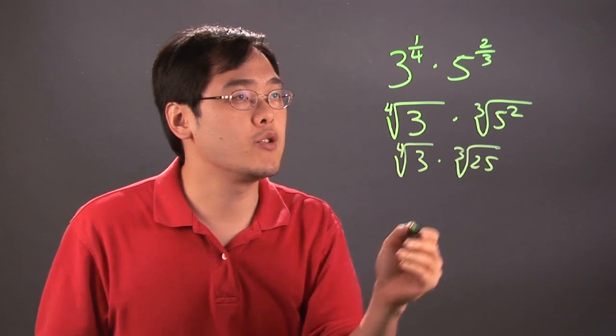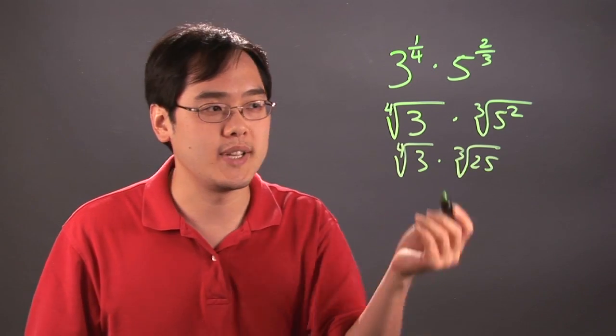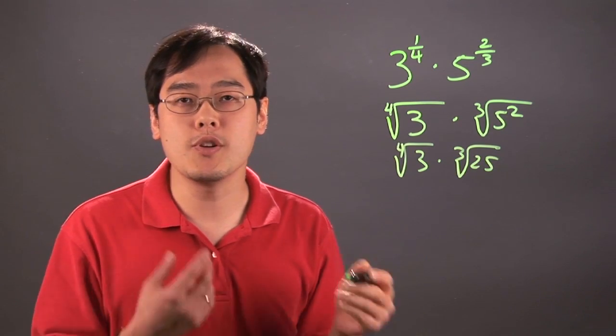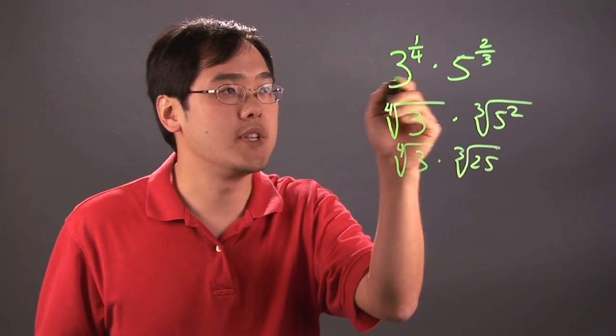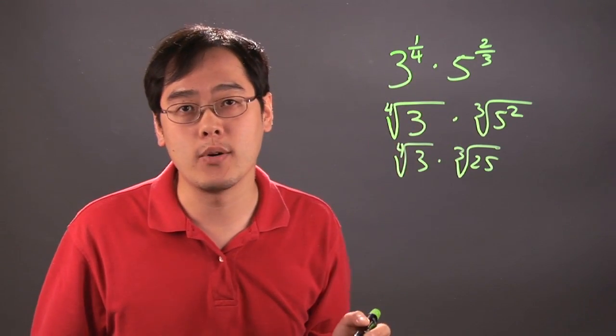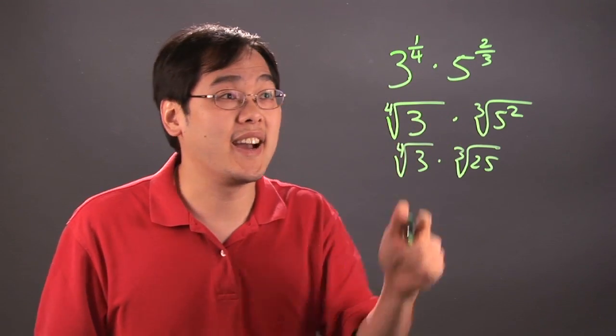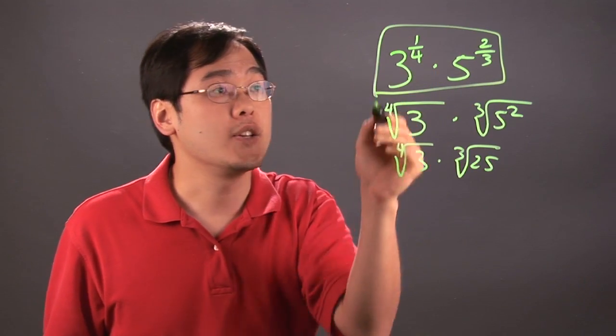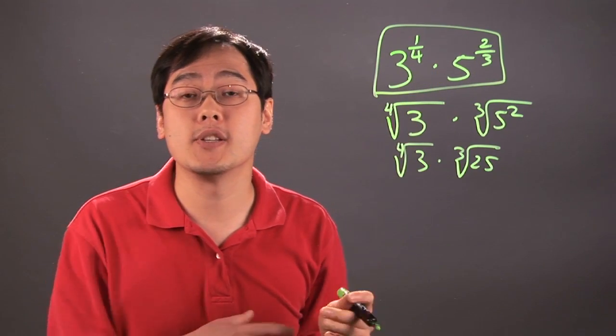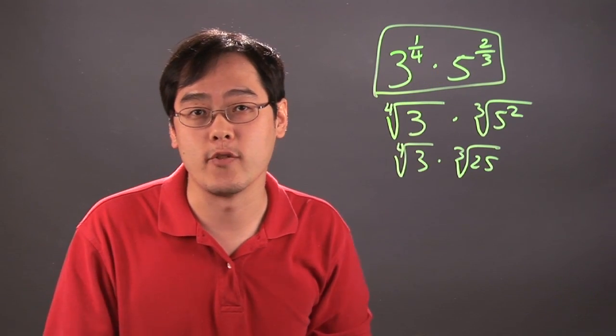You actually have no choice but to leave these terms as is. So the bottom line is when you're multiplying integers of different bases and fraction powers, you really are kind of stuck. What I mean by that is you actually have to leave the terms as is because they're not combinable.